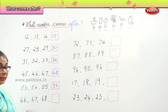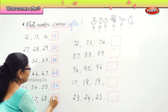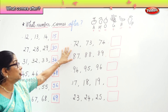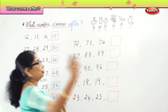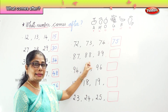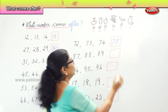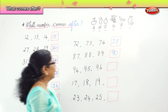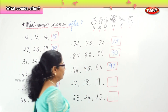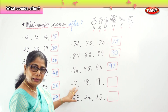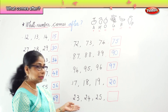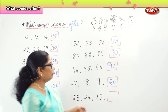What number comes after 66, 67, 68? 69. What number comes after 72, 73, 74? 75. What number comes after 87, 88, 89? 90. What number comes after 94, 95, 96? 97. What number comes after 17, 18, 19? 20 — very good. Finally, what number comes after 23, 24, 25? 26.